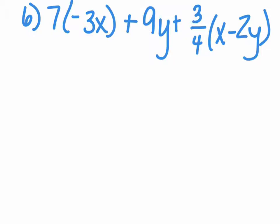We're going to move on to problem 6. First, we're going to do a multiplication. So 7 times negative 3x gives us negative 21x plus 9y.